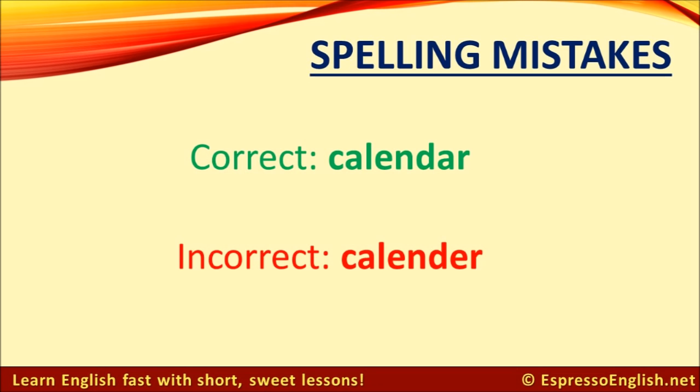Let's look at these mistakes. The correct way to spell the word 'calendar' is with A-R at the end. You might notice that when we pronounce it — 'calendar' — it sounds like E-R, but when we write it, the correct way is to use A-R.